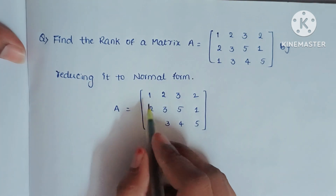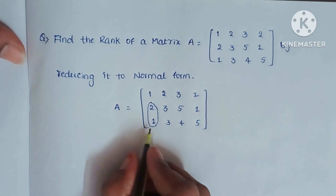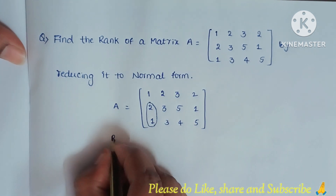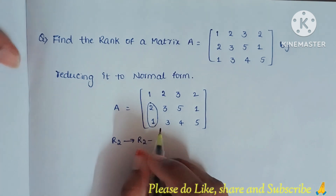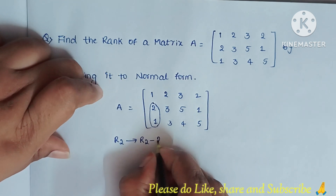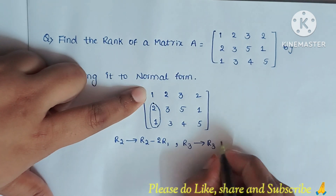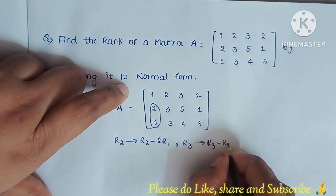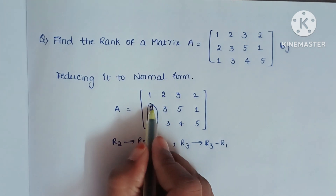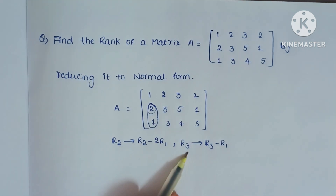For converting into the identity matrix, first we have to convert the elements below the first pivot into 0. We can do this by using row operations. R2 tends to R2 minus 2 times R1, then we will get 0 in that position. Similarly, R3 tends to R3 minus R1.